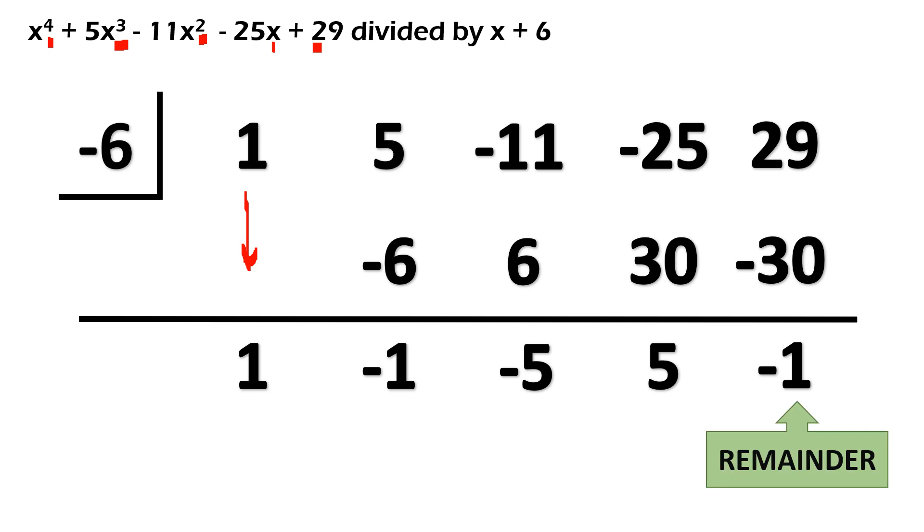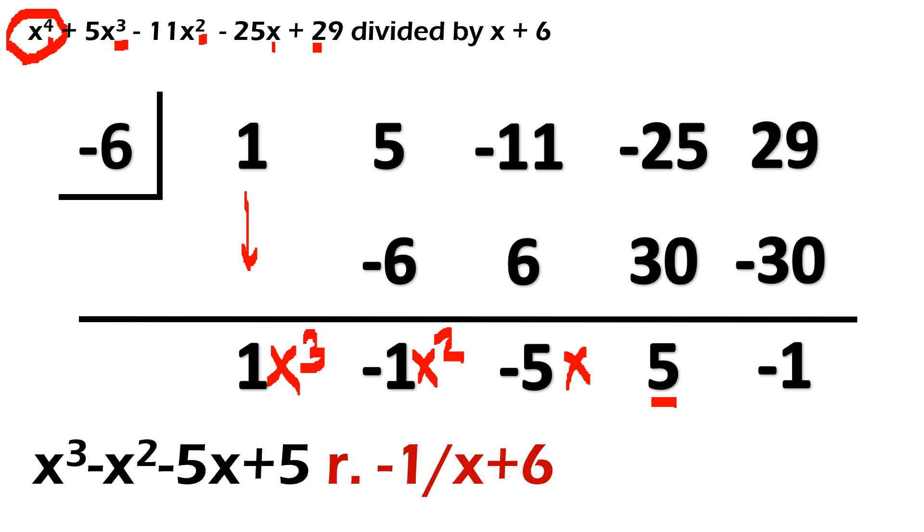Okay, so yung negative 1 that's our remainder. At since dito nagsimula siya sa x raised to 4, yung ating answer mag-start siya sa x cube. Susundan ng x squared tapos x and then your constant and then yung dulo will be your remainder. So, final answer natin is x cube minus x squared minus 5x plus 5 with the remainder negative 1 over x plus 6.